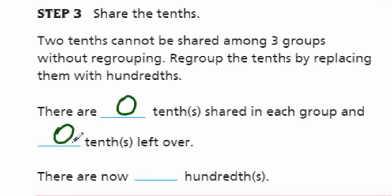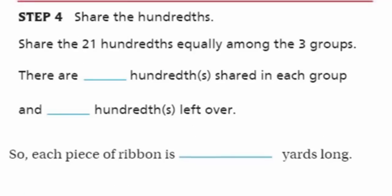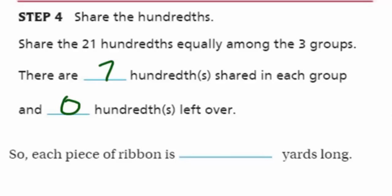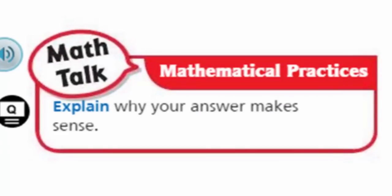After we regroup, we're going to end up now with 21 hundredths. We weren't able to share any tenths at all. Step 4: share the hundredths — share the 21 hundredths equally among the 3 groups. We can take 21 divided by 3, so there's going to be 7 hundredths shared in each group and 0 hundredths left over, because there's no remainder from that division problem. So each piece of ribbon is going to be 1 whole, 0 tenths, and 7 hundredths: 1 and 7 hundredths yards long. Math Talk: explain why your answer makes sense. 3 and 21 hundredths is about 3, and 3 divided by 3 equals 1, so that's really close to the quotient we got — 1 and 7 hundredths.